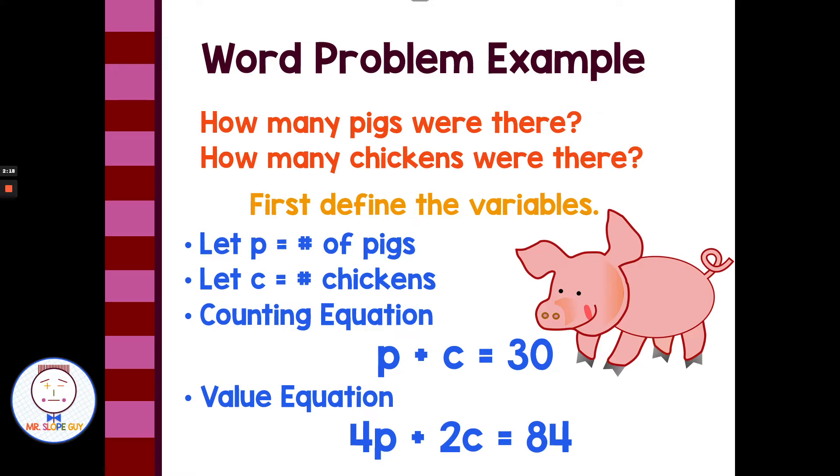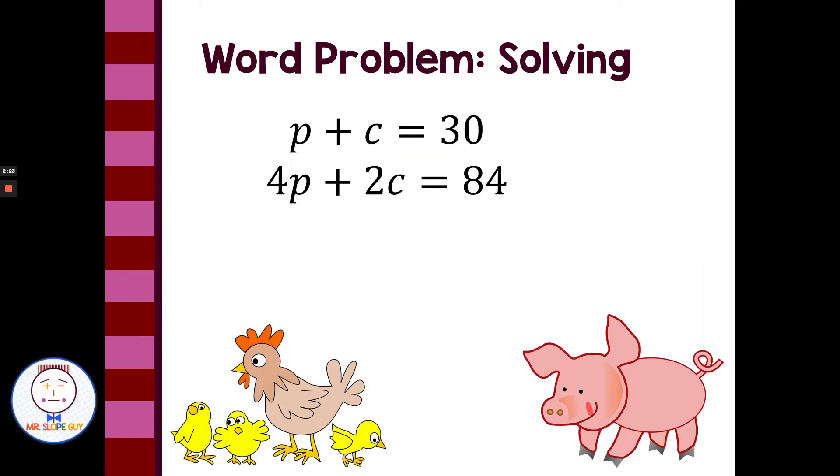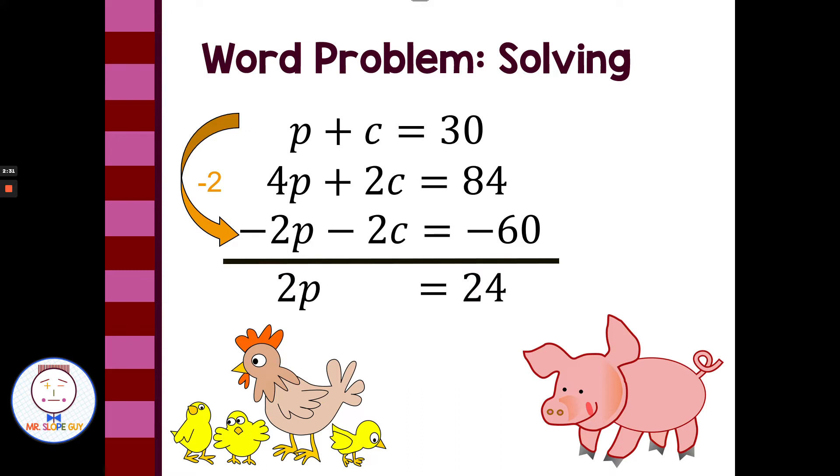Then if you are ready to solve equations, we could solve this system of equation with elimination. We could take that top equation and multiply by negative 2. We could get the c to drop out. 4p plus negative 2p is 2p. 84 plus negative 60 is 24. Divide both sides by 2, and p is 12. So we have 12 pigs. And we know the pigs plus chickens adds up to 30, so if p is 12, then chickens has to be 18. So we have 12 pigs and 18 chickens.